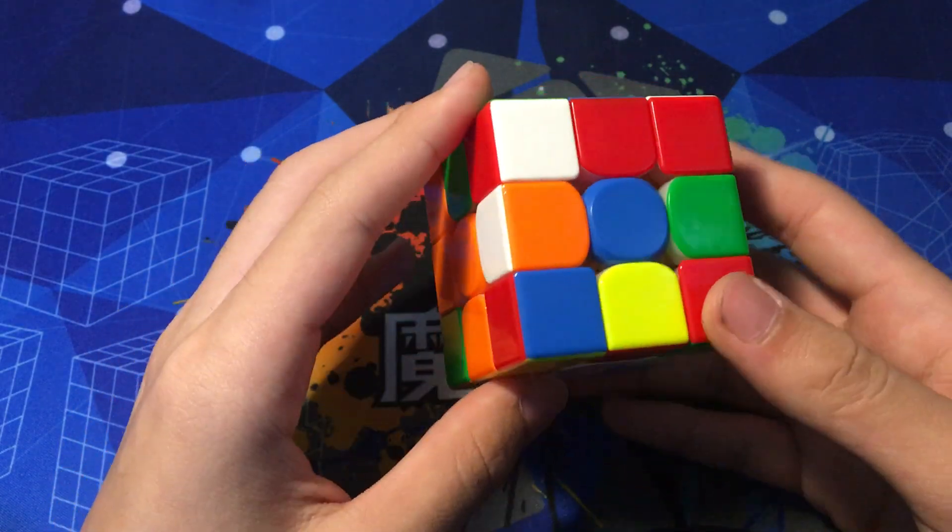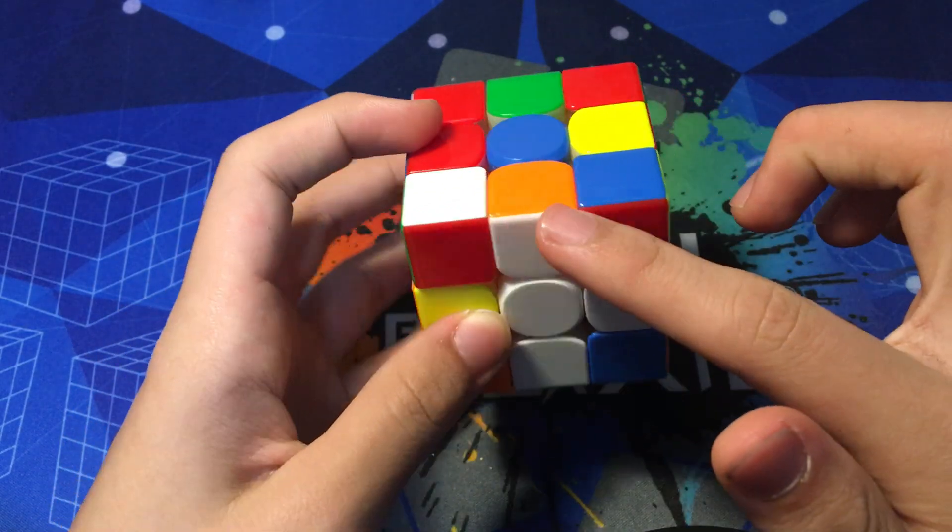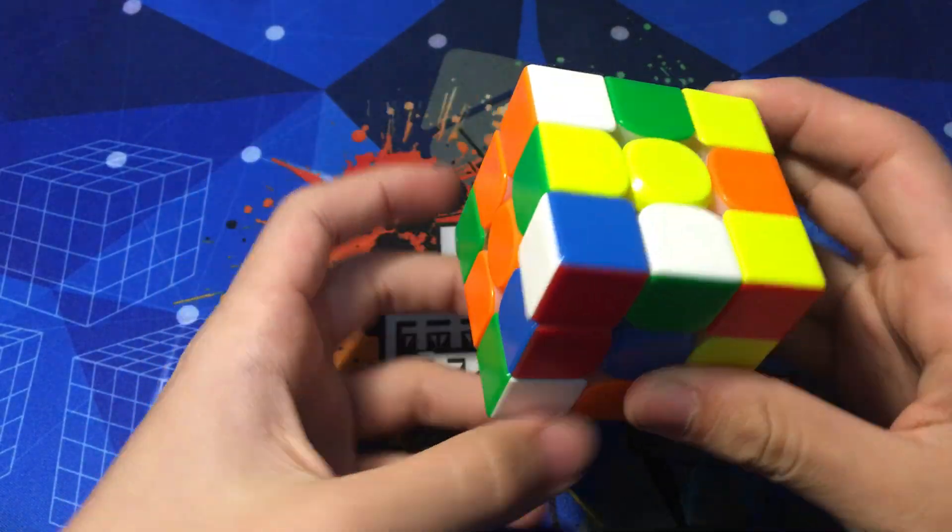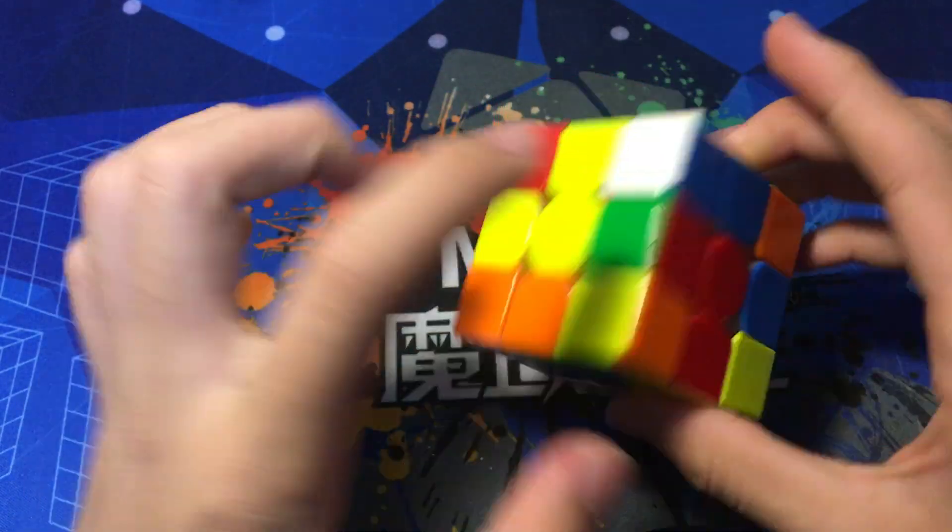Naturally the first move to do is solving this edge relative to these two, and now instead of solving this edge like we normally do, which would break up this pair.